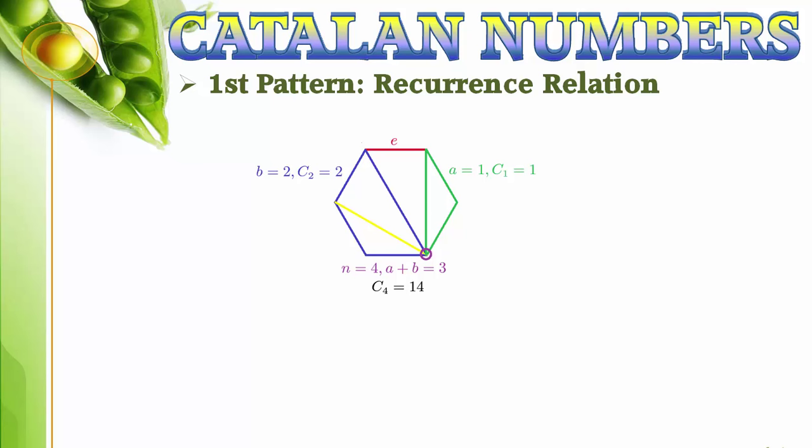The number of triangulations in this case is C sub n minus 1. This is the reason we defined C sub 0 to be 1. So, the total number of ways we can triangulate the original polygon is the sum from i equals 0 to n minus 1 of C sub i times C sub n minus 1 minus i, with the initial condition C sub 0 equals 1.